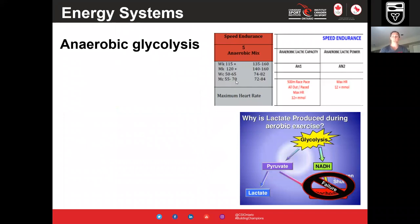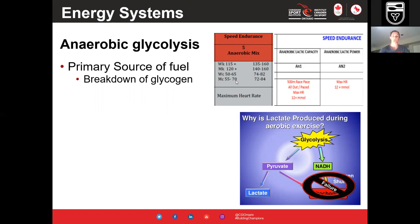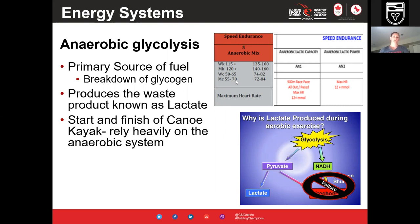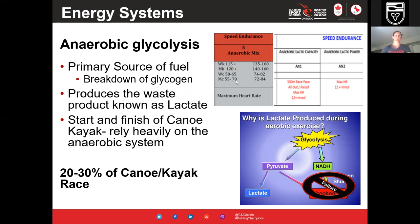Next is anaerobic glycolysis. The primary fuel here is glycogen broken down without oxygen, producing lactate. In canoe kayak racing, about 20 to 30 percent of the race relies on this system — especially at the beginning and end of races. Some studies have actually monitored how much of this system is needed during competition.